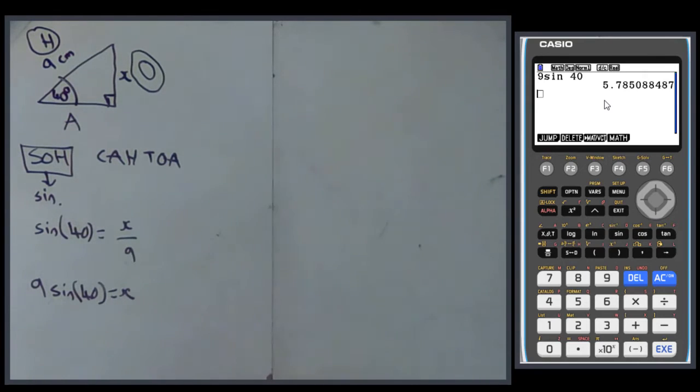And that gives me 5.785. Remember, write the long number and do your rounding afterwards. So x equals 5.78508. And if you've not been told to do anything else, 3 significant figures. So find the third significant figure, 1, 2, 3, look next door, it's a 5. 5 will make the 8 turn into a 9. 5.79 centimeters to 3 sig figs.